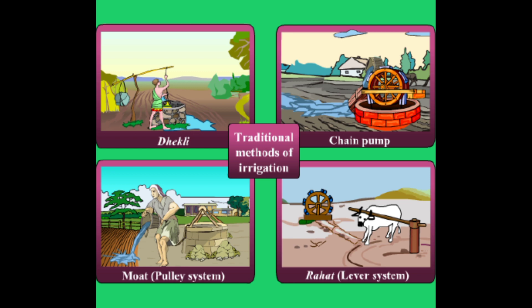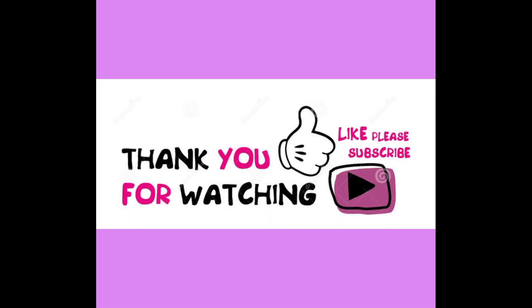There are some traditional methods of irrigation: dhekli, chain pump, moast, and rahat. So these methods are used for traditional method of irrigation.